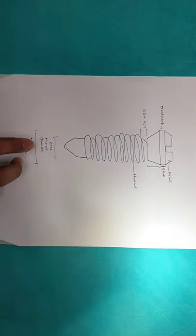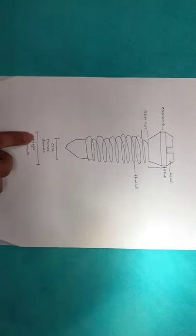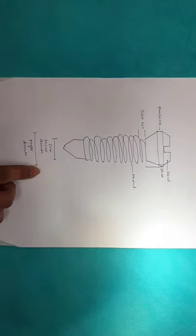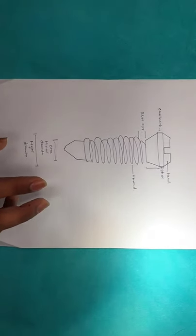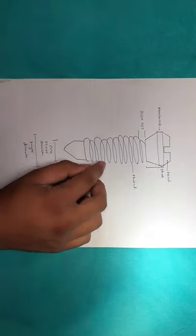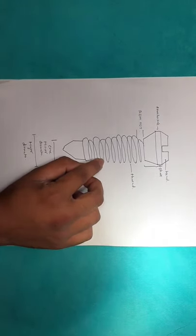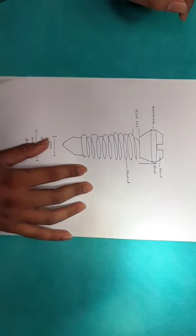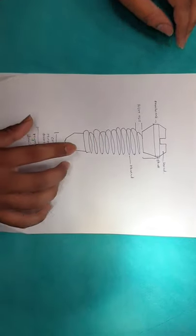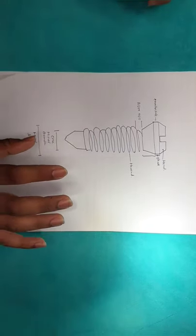The thread has two diameters: this is the core diameter and this is the major diameter. Now we are discussing pitch. What is pitch? Pitch means the distance between these two threads. What is lead? Lead means the distance it travels on each turn. Hence, the pitch is equal to the lead.